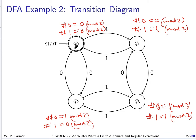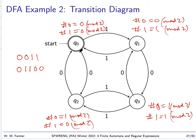Reading the string 0, 0, 1, 1: we start in the start state, read 0 and move to the odd-0s state, read another 0 and return to start, read 1 and move to the odd-1s state, read 1 and return to start — which is the final state, so we accept. For the string 0, 1, 1, 0, 0: we end up in the odd-0s state, which is not a final state, so we do not accept.